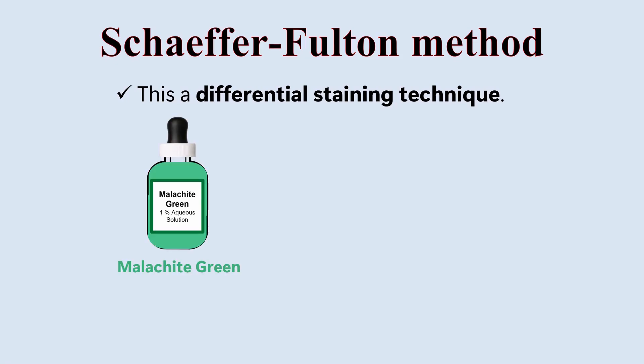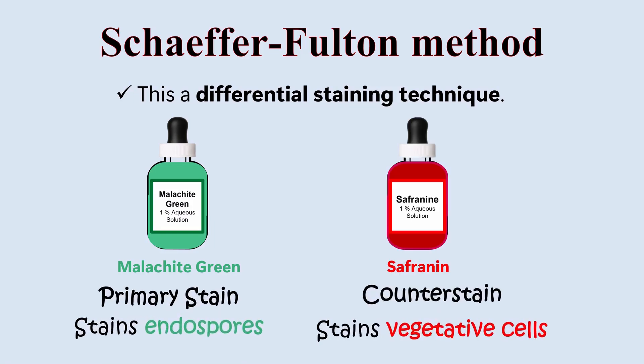This Schaeffer-Fulton method is a differential staining technique. Here, two different stains are used to distinguish between two structures. Primary stain is malachite green, which stains the endospores. And the counterstain is safranin, which stains the vegetative cells.